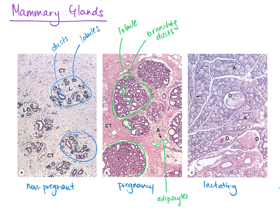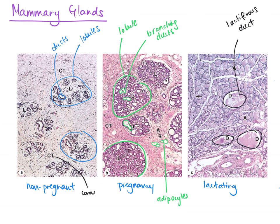Moving on to the image on the right: the lobules have become really large because we're now looking at breast tissue of a lactating breast post birth. The lobules have become large mainly because the alveoli and ducts are now being filled with this pink substance, which is the milk. As we go from left to right — non-pregnant to pregnant to lactating tissue — connective tissue is clearly reducing, and is only sparsely available in the far right lactating breast image, compared to the first image where we can see the term 'CT' all over.